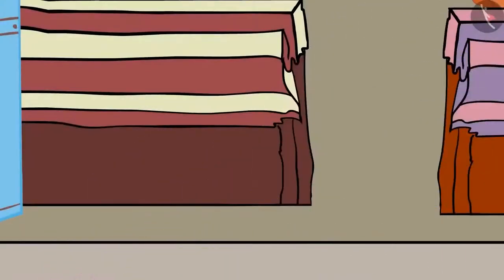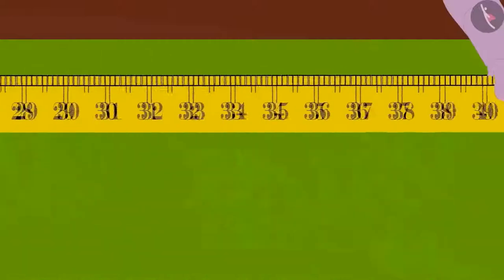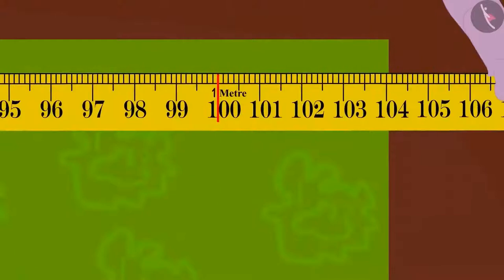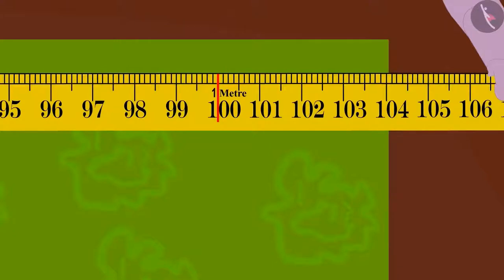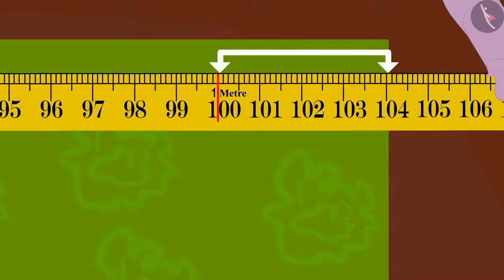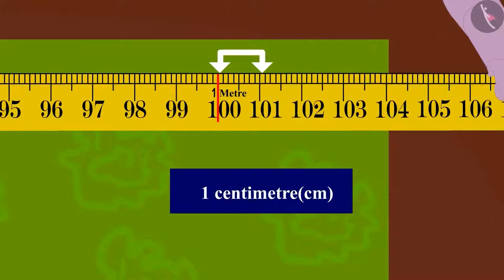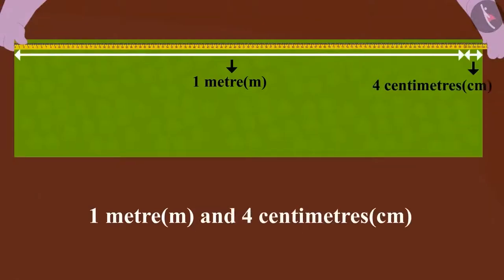Appu took a material from uncle and measured it using the measuring tape. Children, can you tell how long this material is? The length of the material is more than the length of one meter. One small line equals one centimeter. This way, the length of this material is one meter and four centimeters.